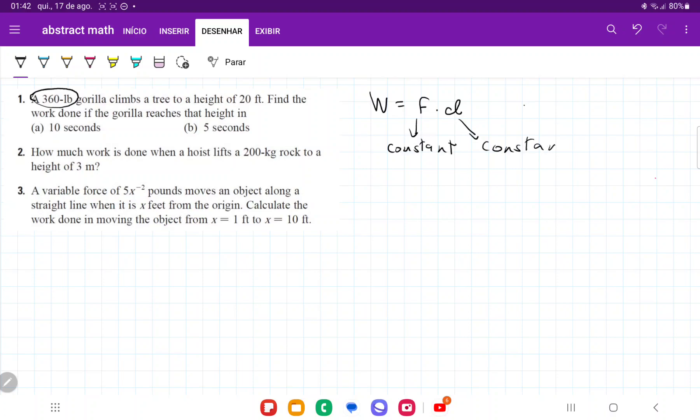So for case A, the work is going to be 360 pounds times 20 feet. This gives us 720 foot-pounds.